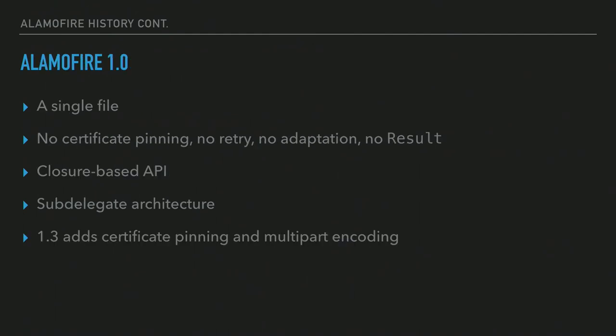Alamofire 1.0 was actually fairly primitive as far as networking libraries go, especially compared to AFNetworking. It was all in a single file — Matt was very proud of the fact that he could fit it into a single file just over a thousand lines long. Needless to say, that didn't last too long. It was missing several features that had defined why people used AFNetworking: certificate pinning, retry, request adapters, and result type. It was all a closure-based API — this was Swift 1.0, so everything was a closure.